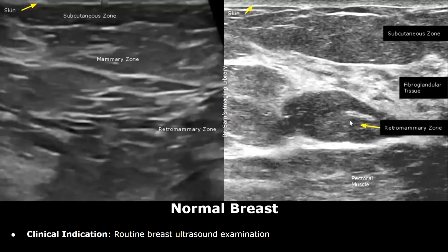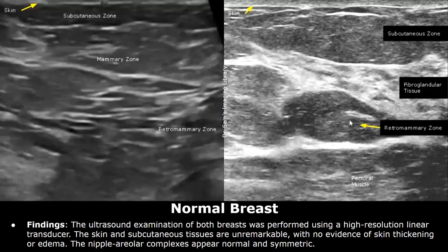The clinical indication was a routine breast ultrasound examination. You can start writing the findings by mentioning what type of transducer was used — usually a high resolution linear transducer is used for the breast. After that you can write about the appearances of the skin and subcutaneous tissues, which are unremarkable with no evidence of skin thickening or edema. Then you can write about the nipple areolar complexes, which in this case appear normal and symmetric.